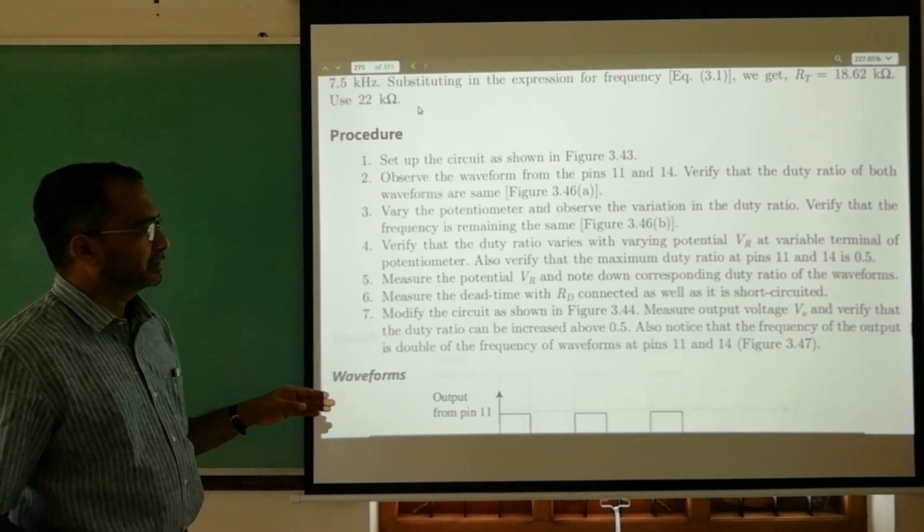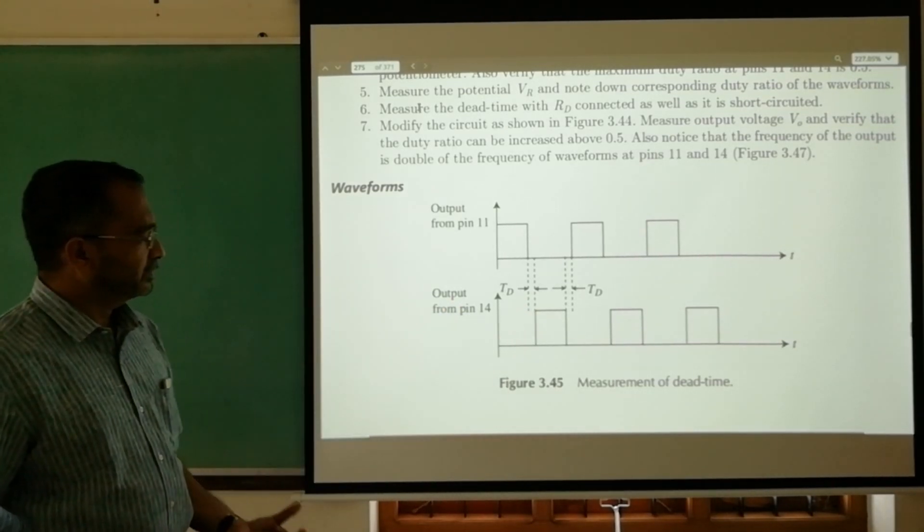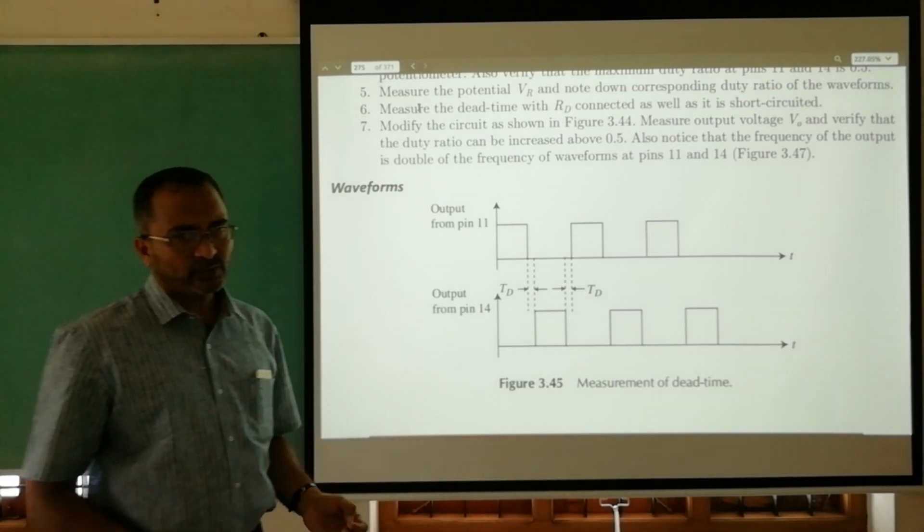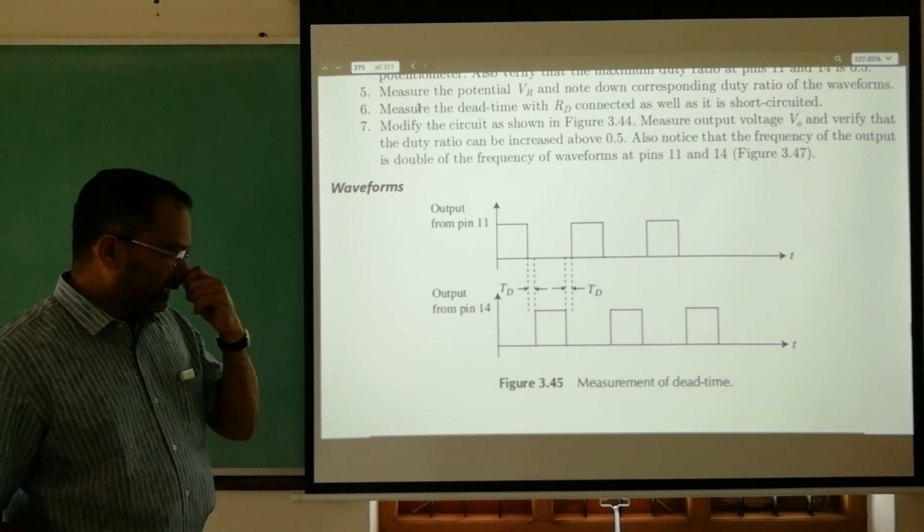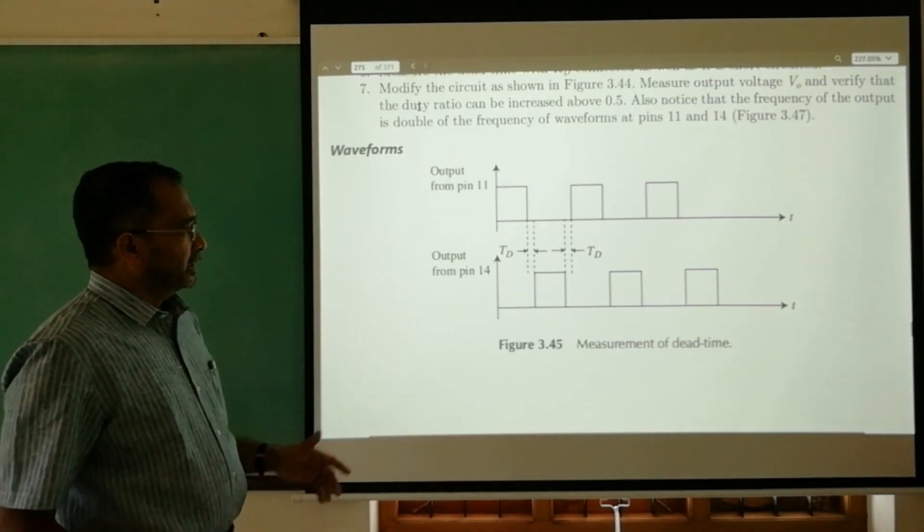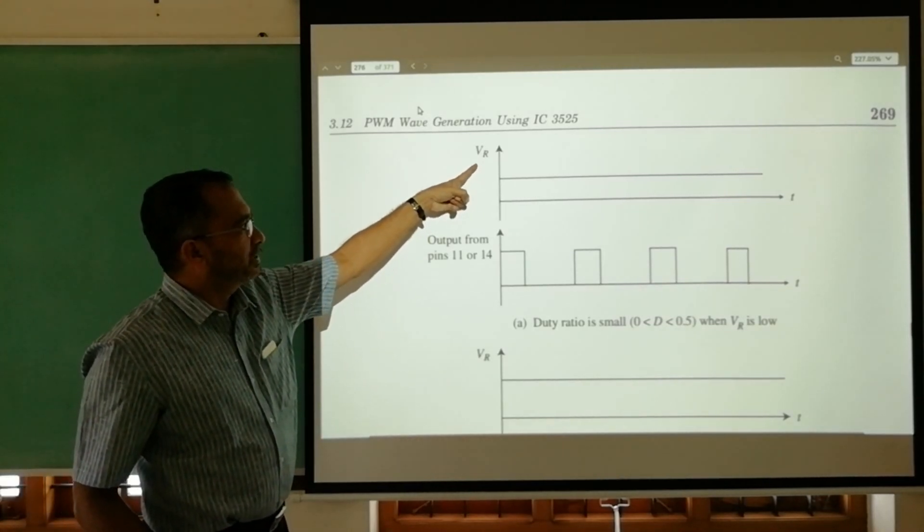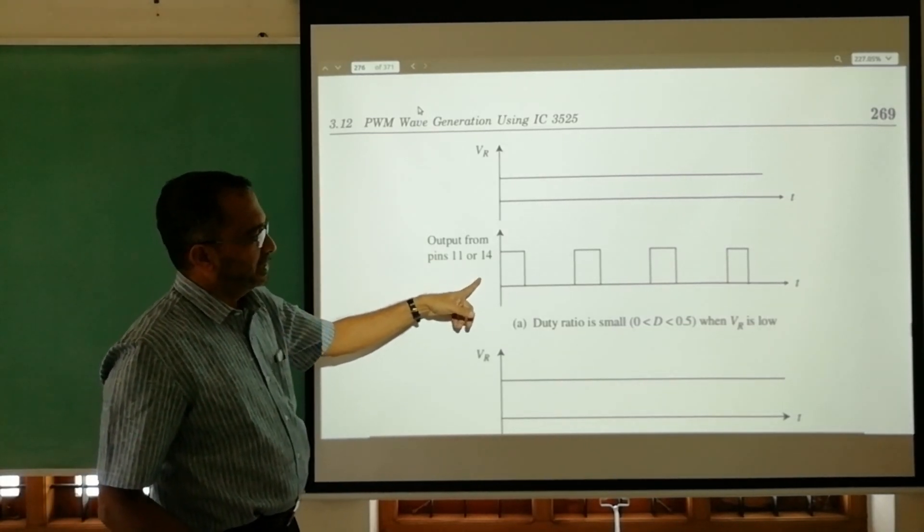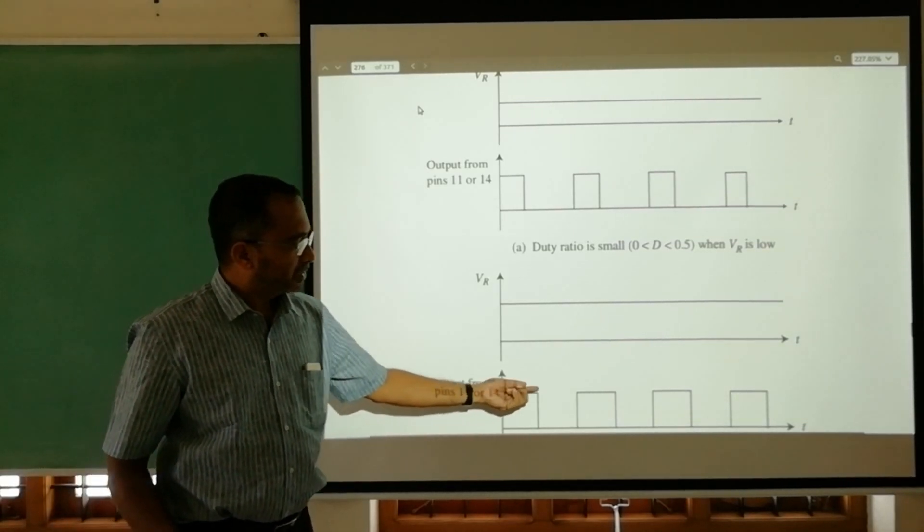This is the waveform obtained from pin number 11. This dead time, as we know, is the delay between two outputs, one here and the other one here. In between there should be some delay to avoid simultaneous switching of switching elements when used in some circuits, which is very dangerous—two elements simultaneously turn on. After measuring dead time, we will see that the output voltage available at pin number two VR can vary. We can see the variation at that pin and the corresponding duty cycle variation. When that voltage is increased by varying the potentiometer, the duty cycle varies and goes up.